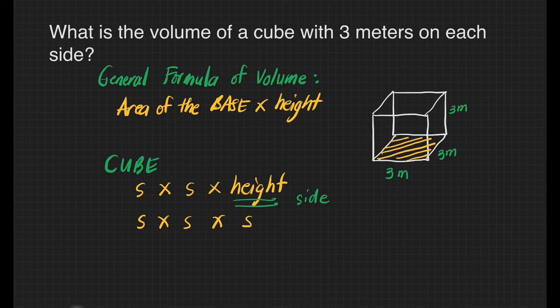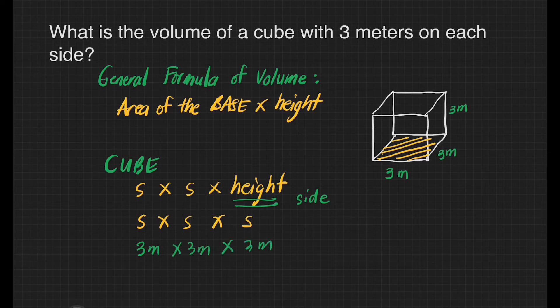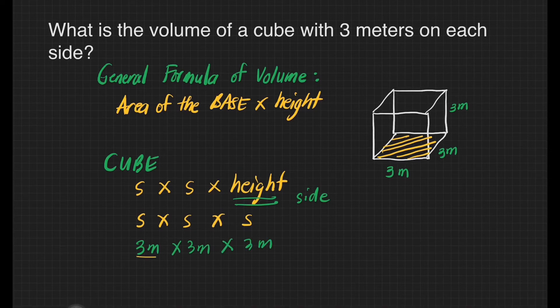Now we are ready to solve for the volume. That's going to be 3 meters times 3 meters times 3 meters. Let's solve first our base. That's 3 meters times 3 meters. That will give us 9 meters squared times 3 meters.